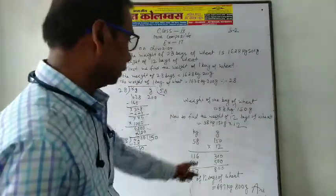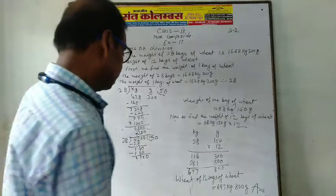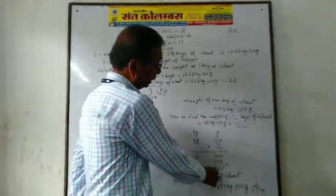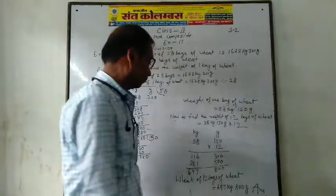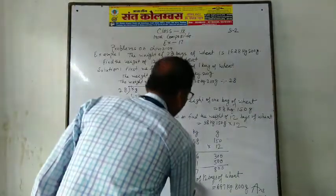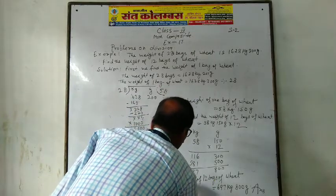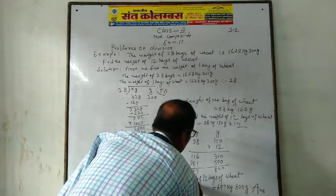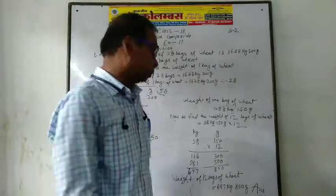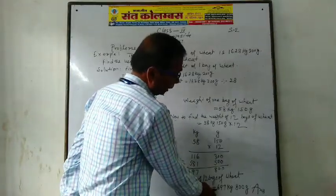The weight is equal to 697 kg 800 grams. Therefore, the weight of 12 bags is equal to 697 kg 800 grams.